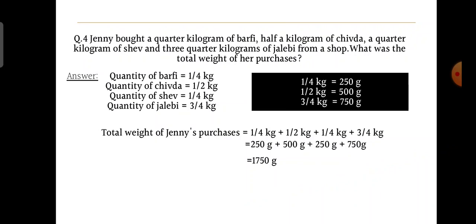Now let's do the fourth sum. Jenny bought a quarter kilogram of barfi, half a kilogram of chivuda, a quarter kilogram of shave, and three-quarter kilograms of jalebi from a shop. What was the total weight of her purchases? Quantity of barfi is ¼ kg, chivuda is ½ kg, shave is ¼ kg, and jalebi is ¾ kg.